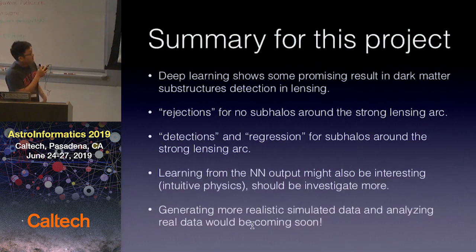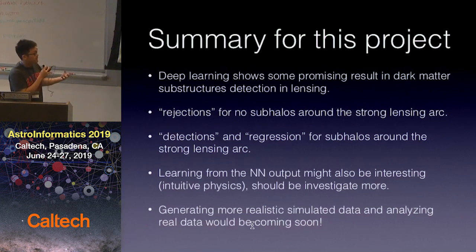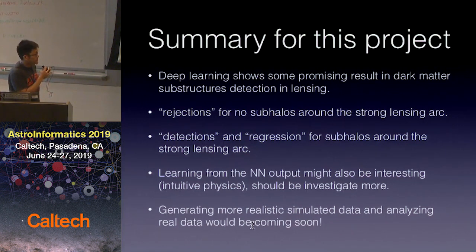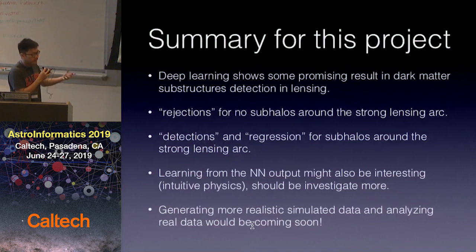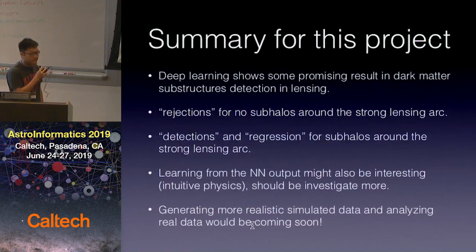To summarize, deep learning could be a really powerful tool to detect dark matter substructures, and also teaches us how to perform rejections. Going forward, we're building more realistic simulations and may use cycle GANs to generate more realistic data, with the goal of applying these methods to real data soon. Thank you very much.